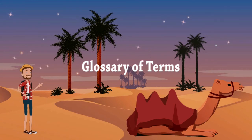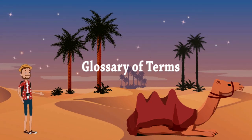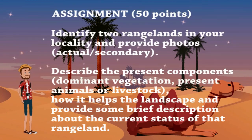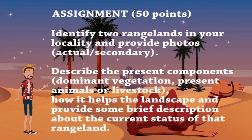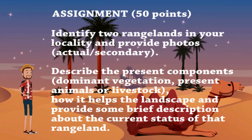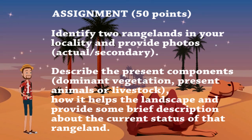You may also add some technical or glossary terms that will serve as your guide for this subject. You may check the material in the Google Classroom. For the assignment, you have to identify two rangelands in your locality with a photo, either actual or secondary. You have to describe the components present in that rangeland, provide how it helps the landscape, and give a brief description about the current status of that rangeland. This assignment is worth a total of 50 points. I hope you have learned a lot. Thank you very much for listening and always keep safe.